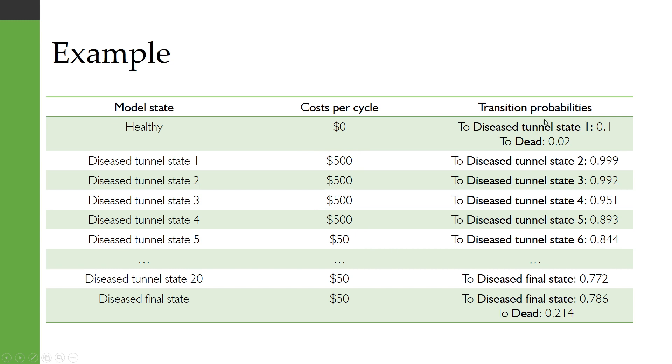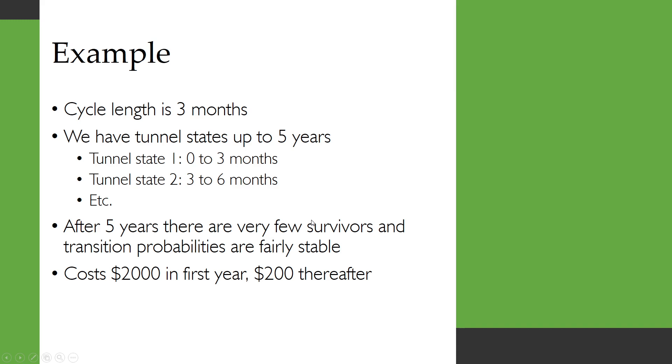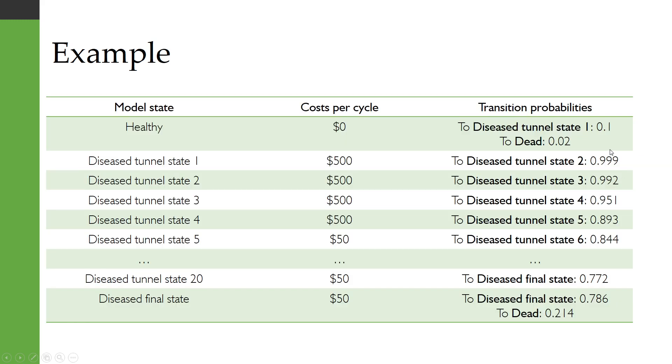We calculate these transition probabilities of going on to the next tunnel state for the diseased state. These start off very high because if you go back you'll see that most people are surviving this first year. But these do diminish over time and then we eventually reach our kind of steady state for being in the diseased state where you have a 0.786 probability of remaining in that state each cycle.